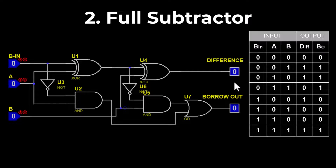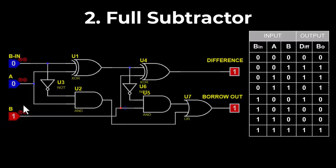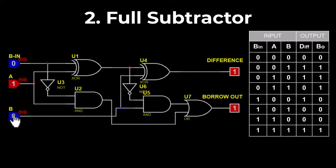When borrow_in = 0, A = 0, B = 1: the difference will be 1 and the borrow out will be 1, because 1 can't be subtracted from 0. When borrow_in = 0, A = 1, B = 0: the difference will be 1 and the borrow out will be 0. When borrow_in = 0, A = 1, B = 1: the difference will be 0 and the borrow out will be 0.